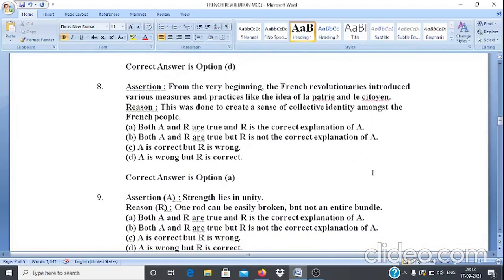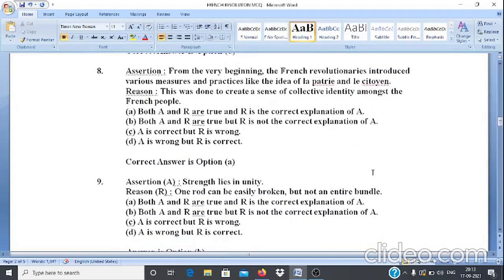Question 8. Assertion A: From the very beginning the French revolutionaries introduced various measures and practices like the idea of La Patrie and Les Citoyens. Reason: This was done to create a sense of collective identity among the French people. Reason is the correct explanation of assertion. That is why correct answer is option A.